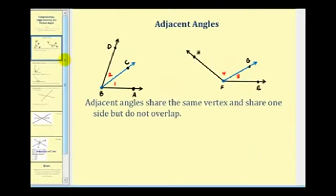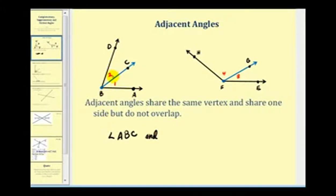Let's first talk about adjacent angles. Adjacent angles share the same vertex and share one side, but do not overlap. Looking at this diagram here, angle one and angle two are adjacent angles. We can identify angle one as angle ABC and angle two as angle CBD.